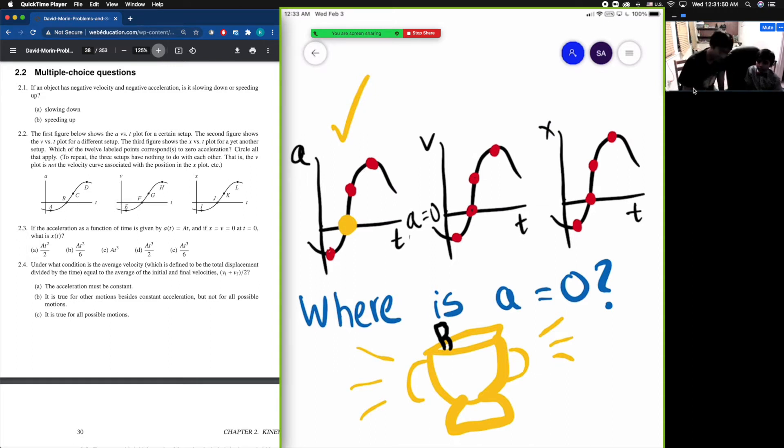What about the V vs T graph? Remember that to find acceleration from a V vs T graph, acceleration is just the derivative of velocity. And velocity is just the derivative of position. The derivative is also slope. So we're basically looking for points here where the slope is zero.